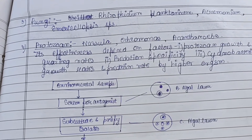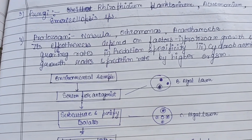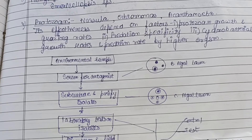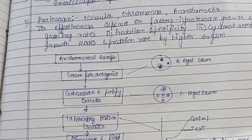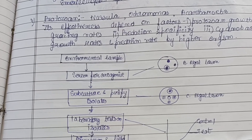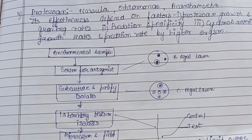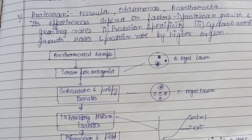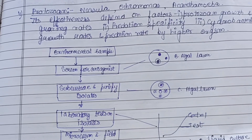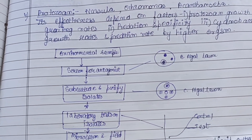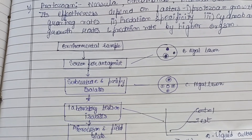In the case of fungi, Rhizophidium planktonicum, Acremonium, and Aphanomycopsis species are used for controlling cyanobacterial blooms. For protozoa, Nassula, Ochromonas, and Acanthamoeba are used. The effectiveness of protozoa depends on factors such as protozoan growth and grazing rate, predation specificity, cyanobacterial growth rate, and the predation rate by higher organisms that feed on the protozoa.